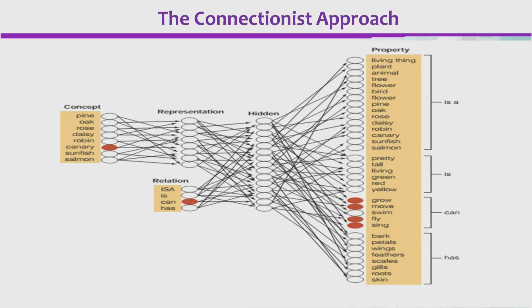We will take the example of just one concept — this red oval — canary, which is a bird. Its representation in the brain is actually here, and it could have a relation with any of the other properties.